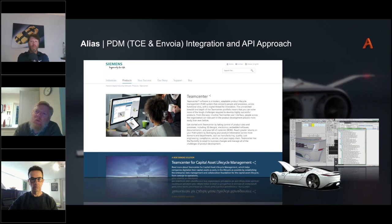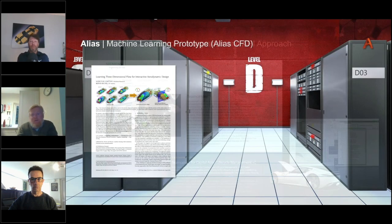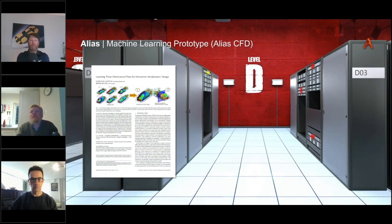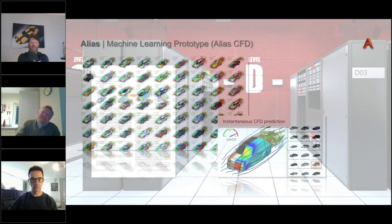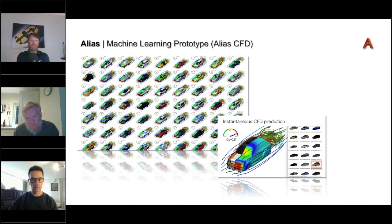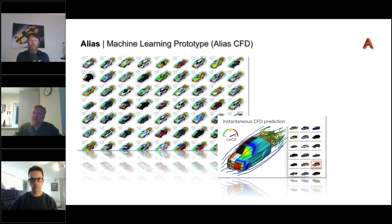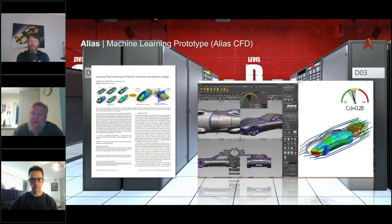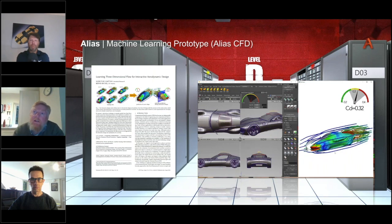What are we doing for the future of Class A and surfacing? We've been beginning to integrate machine learning into Alias — this is science fact, not science fiction. One project is real-time CFD: we taught a CFD algorithm about airflow around 800 cars and integrated that into Alias, so when you move the CVs on the top of the car the airflow updates in real time because it predicts what the airflow is doing based on the algorithm's learnings.